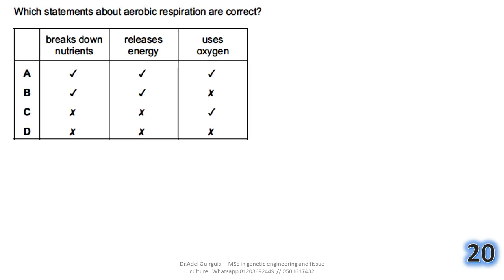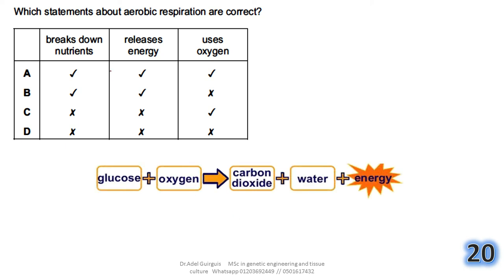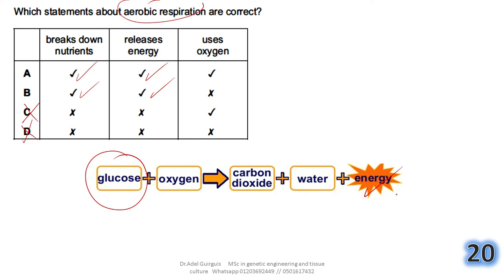Question 20 — the last one: which statements about aerobic respiration are correct? It breaks down nutrients — yes. It releases energy — yes, releasing energy is the purpose of respiration. It uses energy — no, respiration releases energy, it does not use it. So the answer is A.